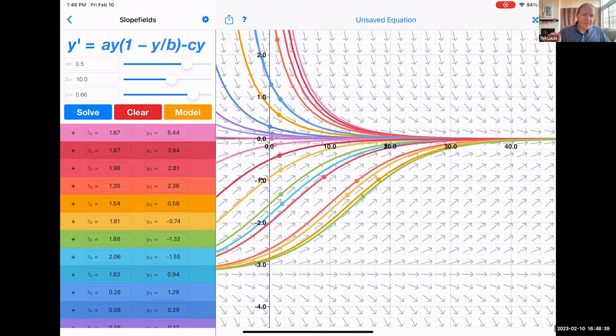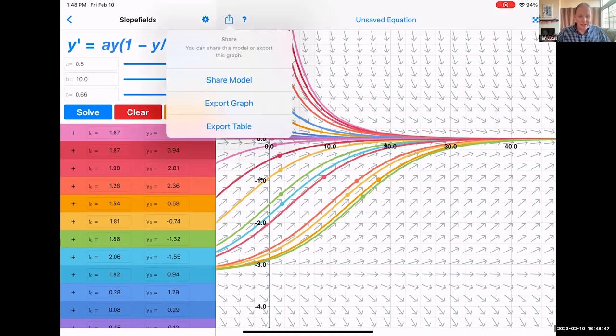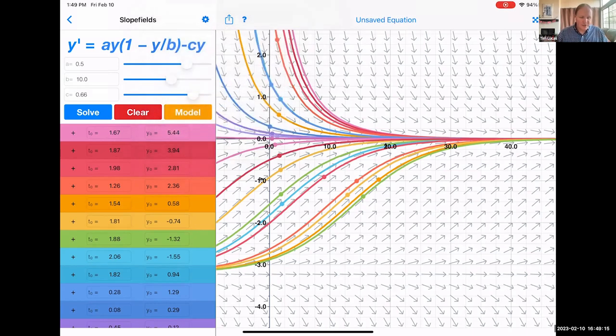Things that are kind of cool. Once you've found a model that you like, you can use the share button. You can actually airdrop, at least on the iPhones, you can airdrop the model to somebody else so that they will want to look at it. You can export the graph if you like. You can export a table of solutions. So if you're working on something and then you want to visualize something else, you can export a table of solutions.